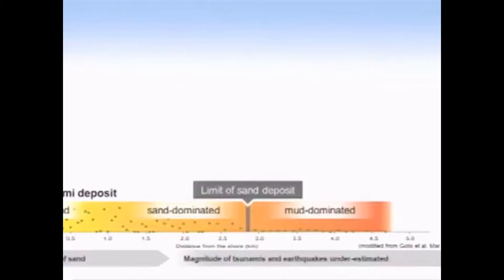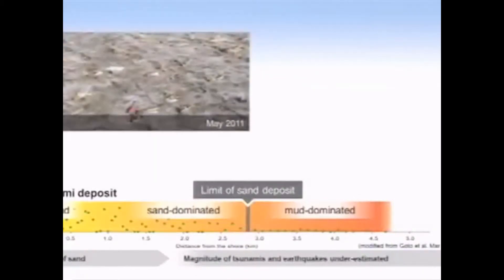The question is: how do you recognize the mud deposited by the tsunami from the surrounding terrestrial mud? You could look for marine macrofossils, but sometimes they're not present. The tsunami comes from the sea and it left lots of salt behind. These white stains visible in the field are salt crust at the top of the mud, two months after the event, about 3 kilometers inland.